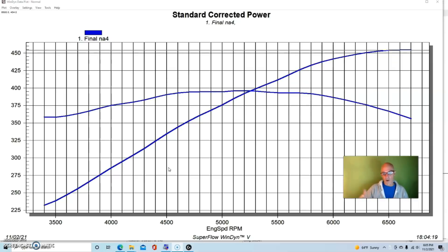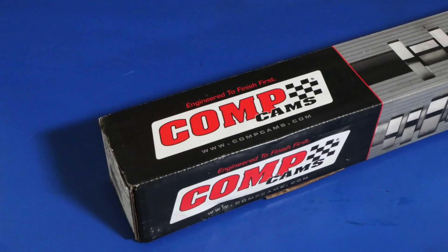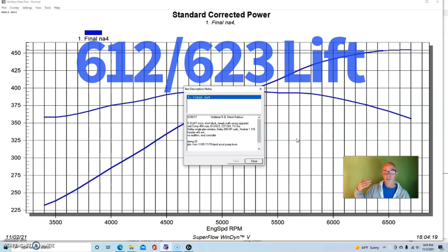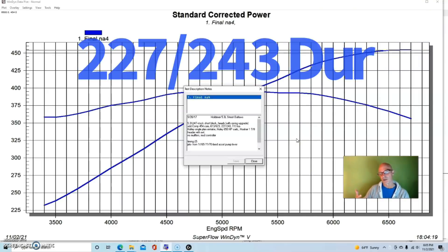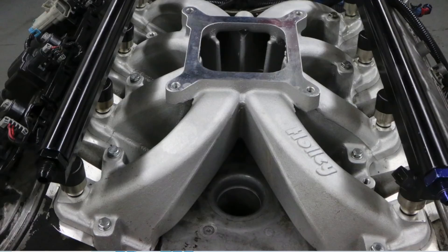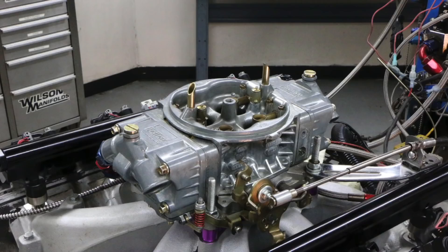We were running this junkyard motor, a junkyard 5.3, an LM7. It had a good healthy Comp cam, the Comp 54-454-11, so it was a 613-623 lift, 227-243 degree duration at 113 degree lobe separation angle. We had a Holley single plane intake manifold, a 650 Holley HP carburetor.